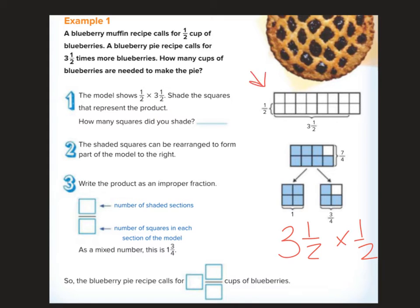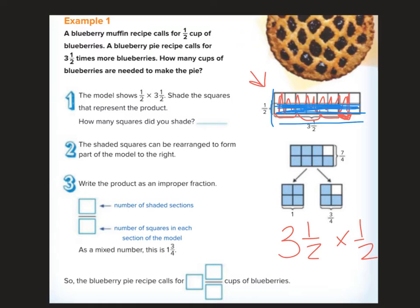The model shows one-half times three and a half. Shade the squares that represent the product. So this is three and a half - here's one, here's two, here's three, and then a half of that last one. So when we did this before, I would have shaded all of this, and then using another marker color, I need to shade a half this way. So I would shade a half.